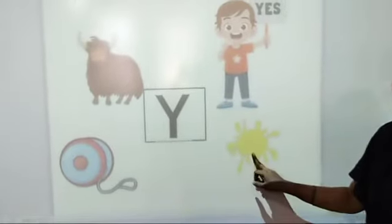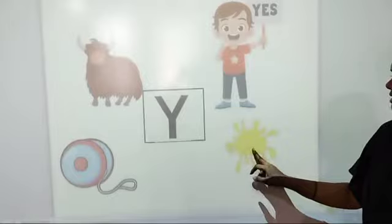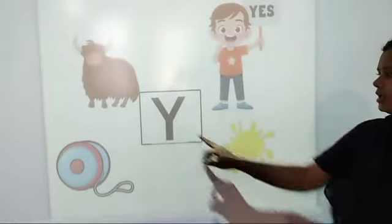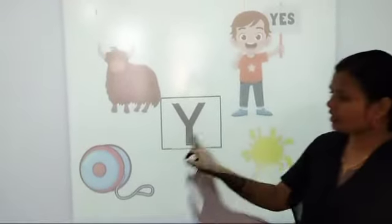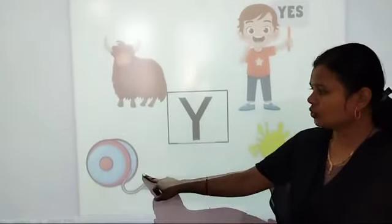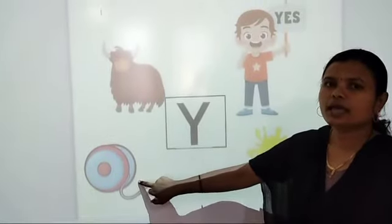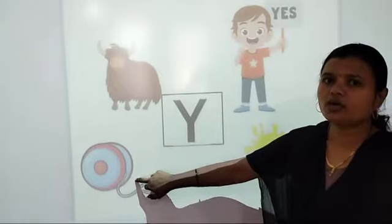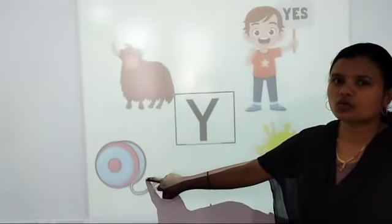And this is Y yellow. Which color is this? Yellow color. Y yellow. And Y yo-yo bhi hota hai. Y yo-yo. Yo-yo ye kya hai? Ye toy hai. Aur iska naam Y yo-yo hai.